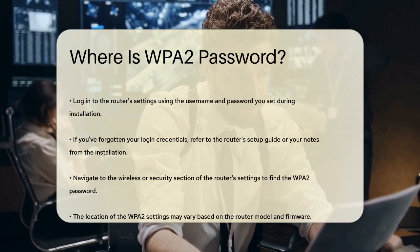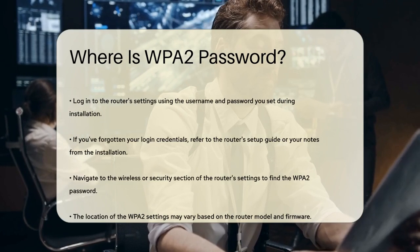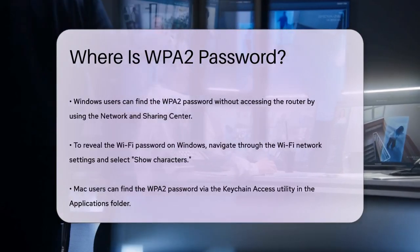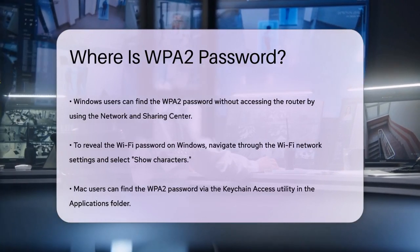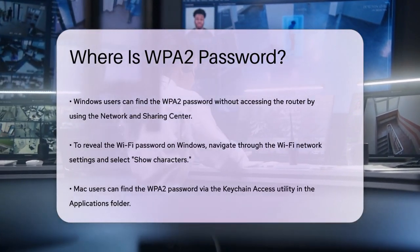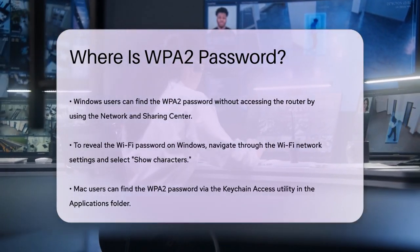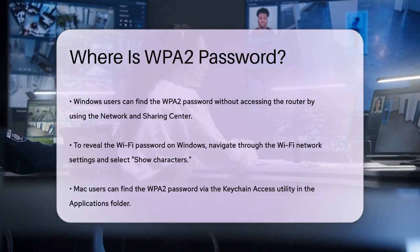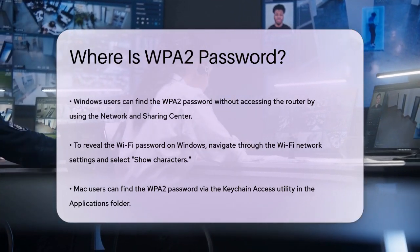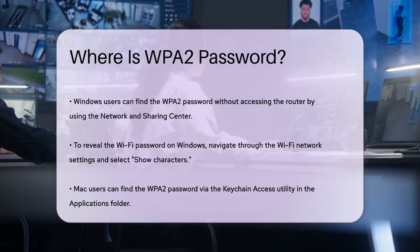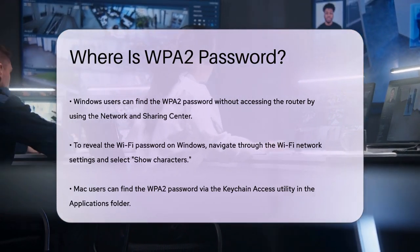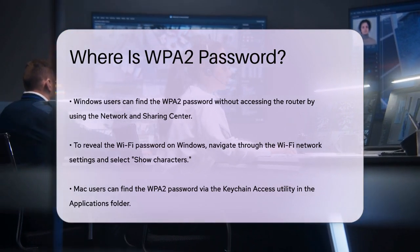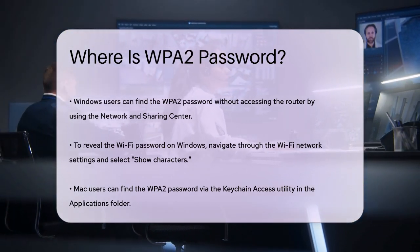If you're using a Windows computer, you can also find your WPA2 password without logging into the router. Right-click on the Wi-Fi icon in the bottom right corner of your screen, select Open Network and Internet Settings, then go to Network and Sharing Center. Click on Change Adapter Settings, select your Wi-Fi network, double-click on it, and then click on Wireless Properties. In the new window, go to the Security tab and tick the checkbox next to Show Characters to reveal your network security key.